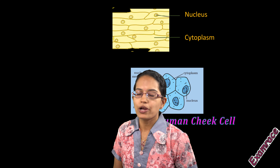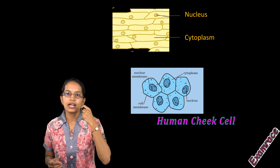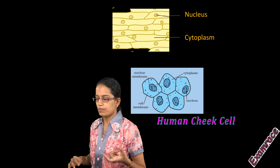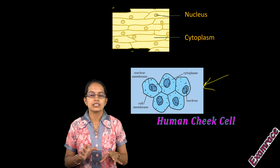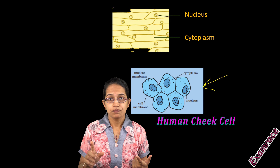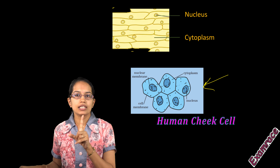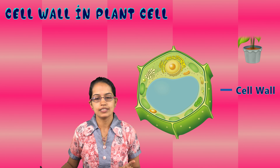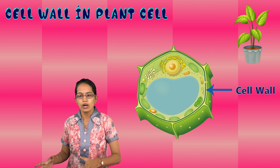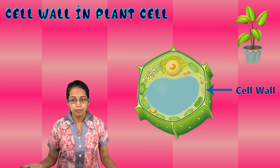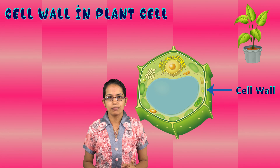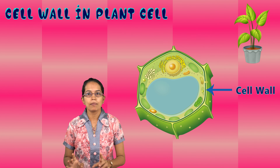A good experiment you can do yourself is with a cheek cell. Take a toothpick, take a sample of your cheek cell, stain it with iodine and methylene blue, and look under a microscope — you will see the structure of cells present in the cheek of a human being. In this structure, you only have a cell membrane; there is no cell wall. Cell wall is absent in animal cells and is only present in plant cells, mainly for the protection of plants. Since plants cannot physically move, the cell wall protects them from variations in temperature, wind, moisture, and humidity, and gives them shape and a rigid structure.